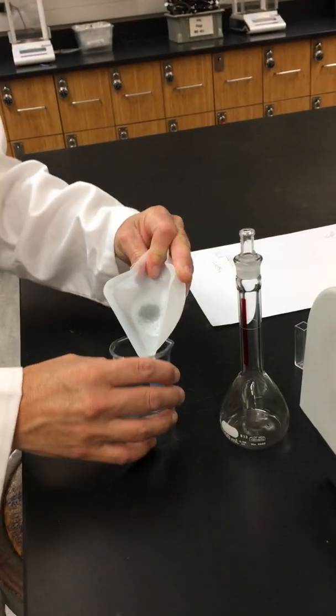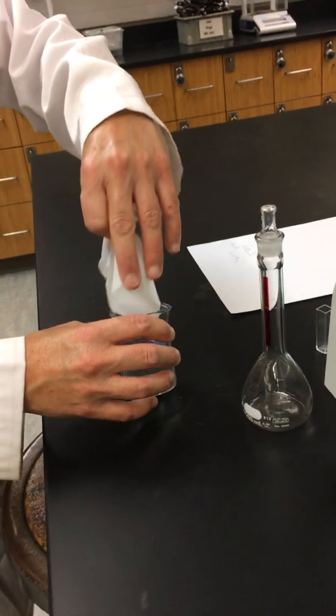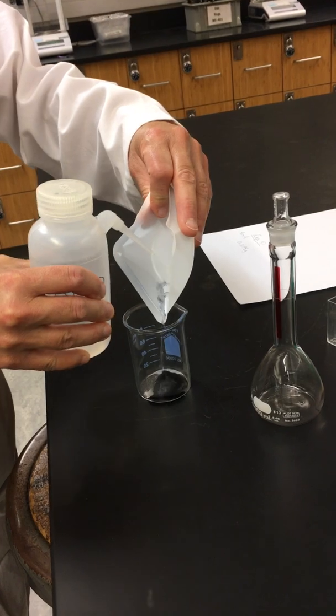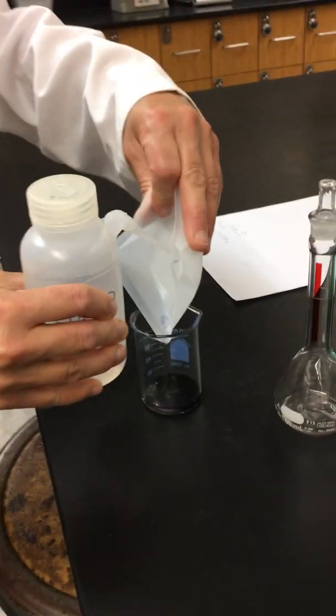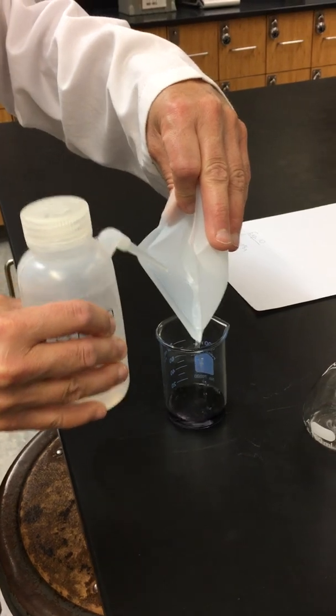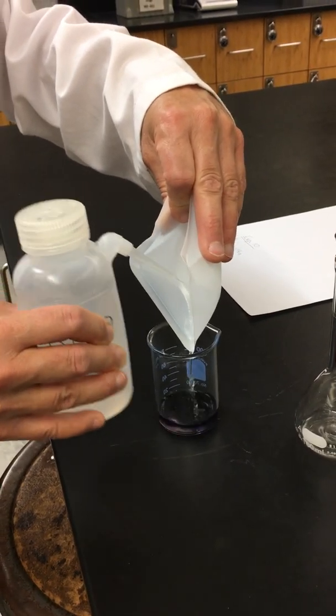We're going to start by taking our Kool-Aid mixture, and we're going to be diluting it using deionized water. We want to make sure we get all of that Kool-Aid mixture into my beaker. So we're going to dilute it with less than 100 milliliters.